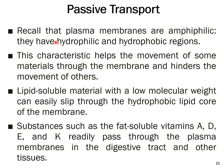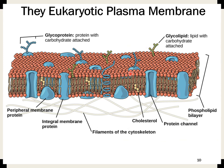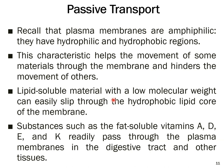Plasma membranes are amphiphilic — they have both hydrophilic and hydrophobic regions. The polar head groups are hydrophilic regions while the non-polar tails are hydrophobic regions. This characteristic helps the movement of some materials through the membrane and hinders the movement of others, giving the cell membrane the ability to control which materials pass through it.